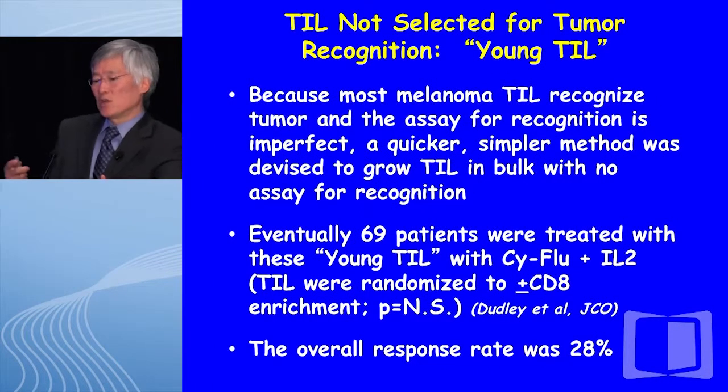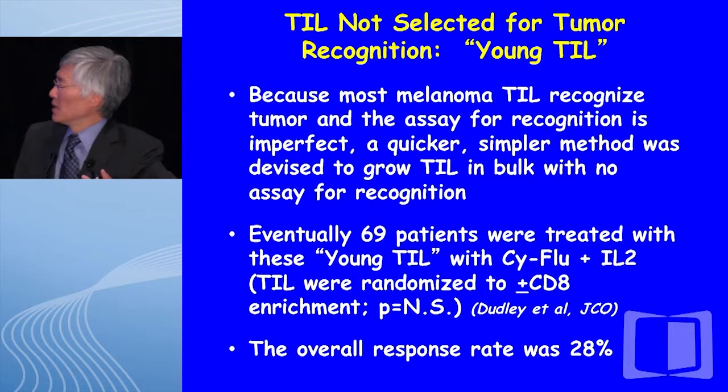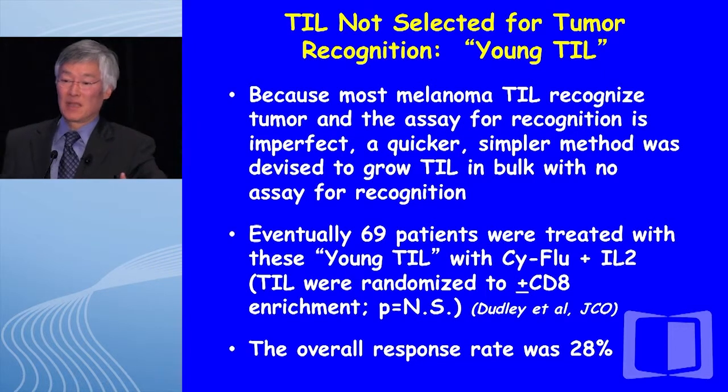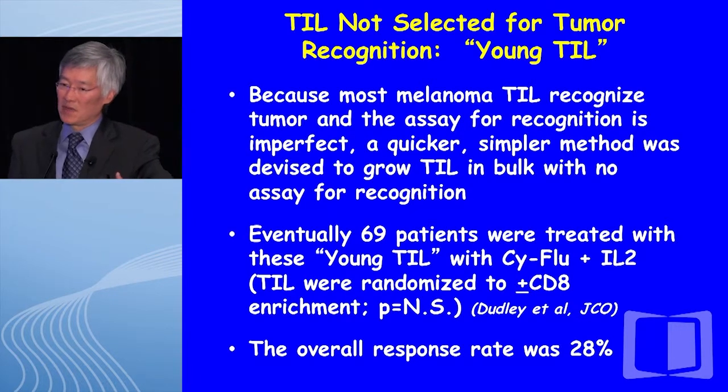We wanted to look at the value of the tumor assay, because it's cumbersome and not accessible to everyone. Most melanomas already recognize tumor — probably more than we can actually demonstrate — and the assay for recognition is imperfect. If you don't have autologous tumor or it's not healthy, you'll get a false negative readout. So we thought: why not just grow them and give them? We did that in a process called YoungTIL, where we grew a bulk population extremely rapidly and gave them as quickly as we could, hoping they would have a younger phenotype. As it turns out, they really don't — they look the same as selected TIL grown for a longer period of time.